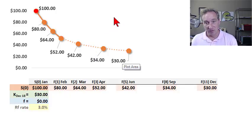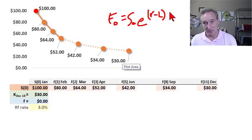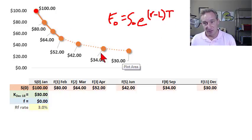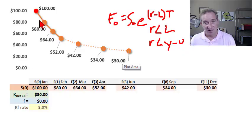Applying the same three features to backwardation: the first point is that if the theoretical futures price is a function of the spot price grown at the risk-free rate minus the lease rate, then backwardation implies the risk-free rate is less than the lease rate — or less than the net convenience yield. This seems to be the case often for oil.